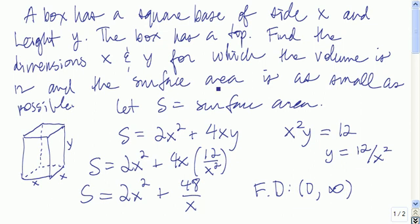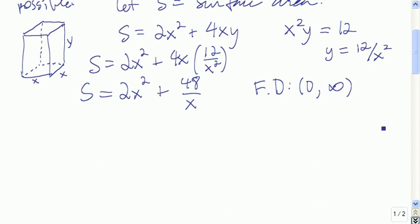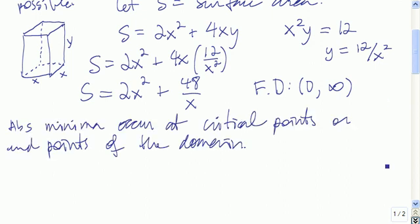Now we're going to use calculus. We want to find the value of x for which s has an absolute minimum. Absolute minima occur at critical points or endpoints. In this case, our domain is an open interval, so we have no endpoints. So we know that s has to achieve its absolute minimum at one of the critical points it has.